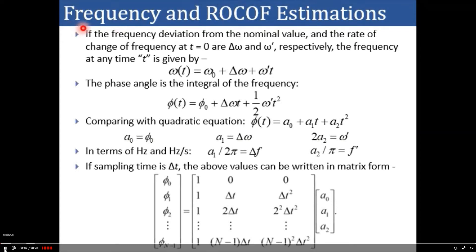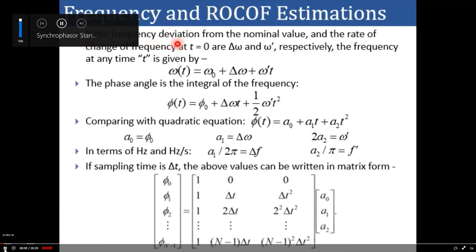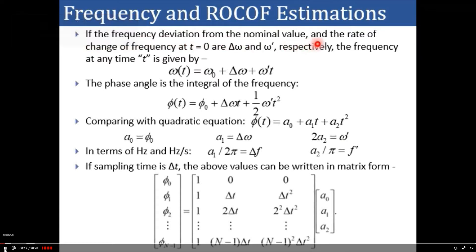Let us talk about the estimation of frequency and rate of change of frequency. If the frequency deviation from the nominal value and the rate of change of frequency at time t=0 is delta omega and omega dash, then the frequency at any time t can be given as: omega(t) = omega naught (fundamental frequency) + delta omega (change in frequency) + omega dash * t (rate of change of frequency component).